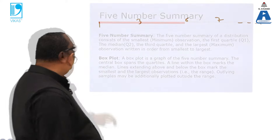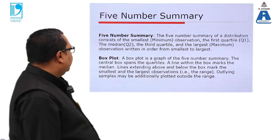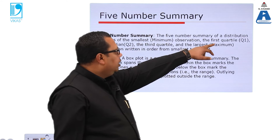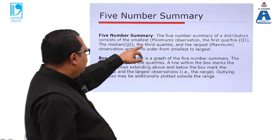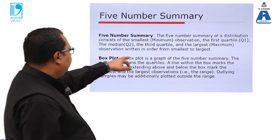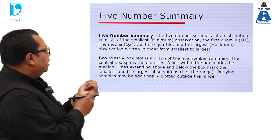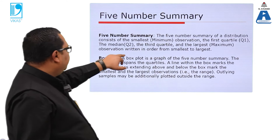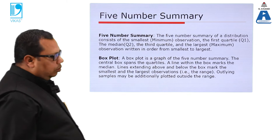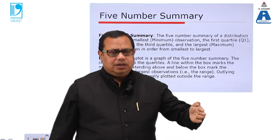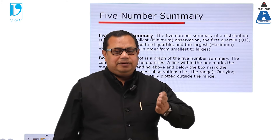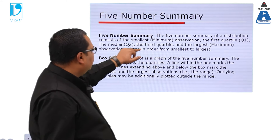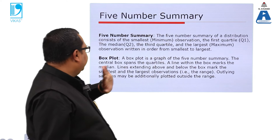Now we study the five-number summary. The five-number summary of a distribution consists of: the smallest (minimum) observation, the first quartile (Q1), the median (Q2), the third quartile (Q3), and the largest (maximum) observation — written in order from smallest to largest.